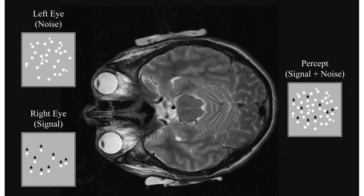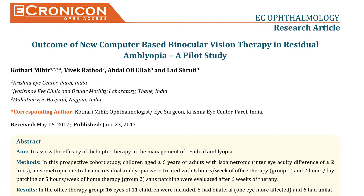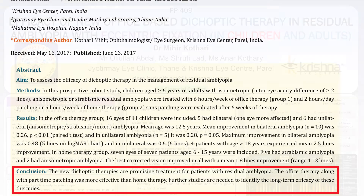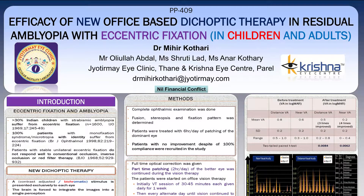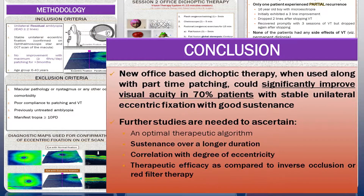The better eye receives a stimulus with reduced contrast. It promotes development of binocular vision by reducing inhibitory interactions and suppression within the ocular dominance column. Our study on dichoptic therapy with residual amblyopes showed excellent gain in visual acuity and stereopsis. Our award-winning poster at the 2018 AIOC clearly showed the efficacy of dichoptic therapy in adults and even eccentric fixators.